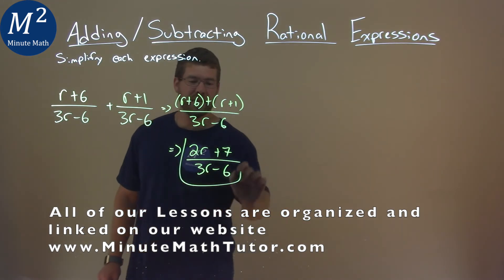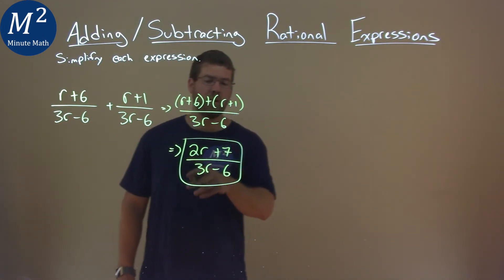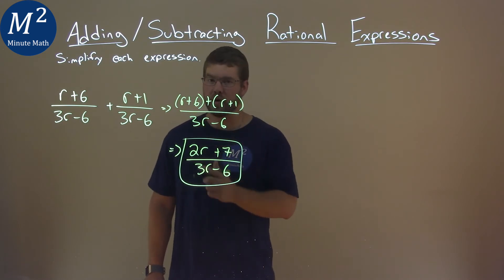There's nothing else that we can do to simplify here. And so our final answer is 2r plus 7 over 3r minus 6.